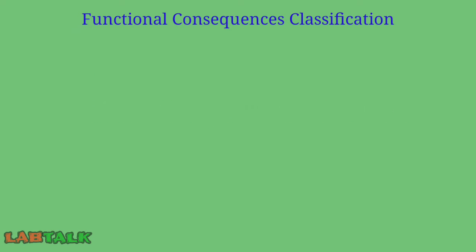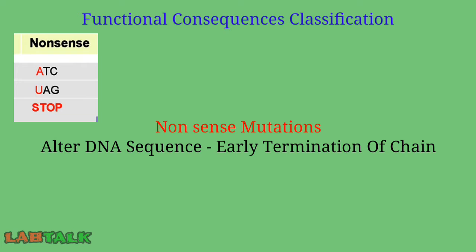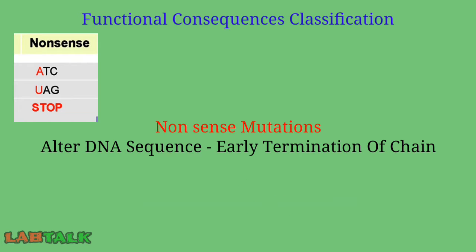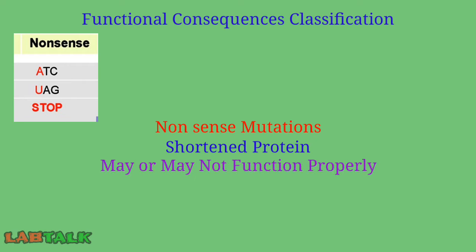Next are nonsense mutations. In this type, instead of substituting one amino acid for another, the altered DNA sequence leads to early termination of the protein due to incorporation of a stop codon. This results in a shortened protein that may or may not function properly.